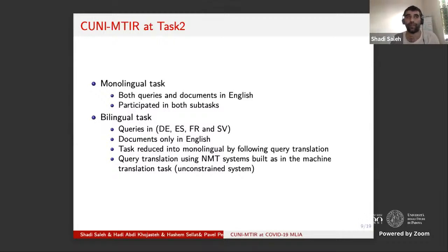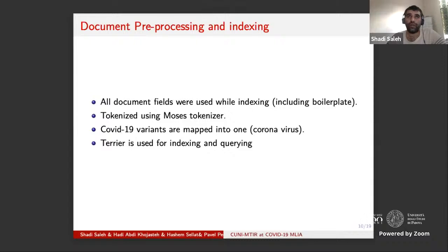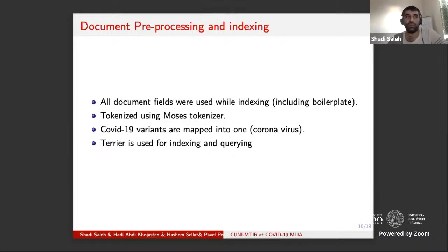For document preprocessing and indexing, we used all fields from the documents including boilerplate. We found from previous experiments that doing some cleaning or ignoring boilerplate might reduce performance. After taking all text from the collection, we tokenized it using Moses tokenizer. We also tried to map some variations of COVID into one expression — 'coronavirus.' If you have SARS-COVID, n-COVID, or around five variations mentioned in the report, we mapped them into one expression. One might argue that COVID is different from coronavirus, but we noted that in online news people actually misuse these two terms — sometimes referring to coronavirus as the disease or vice versa.